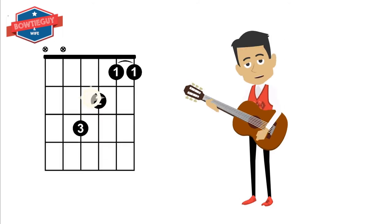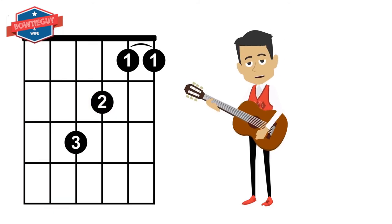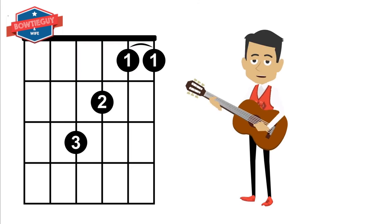The last chord we are going to learn about is the F major chord. Take your index finger and hold it over the first fret on the B and the E strings. Then take your middle finger and hold it over the second fret of the G string. And take your ring finger and hold it over the D string of the third fret. Give it a whirl.